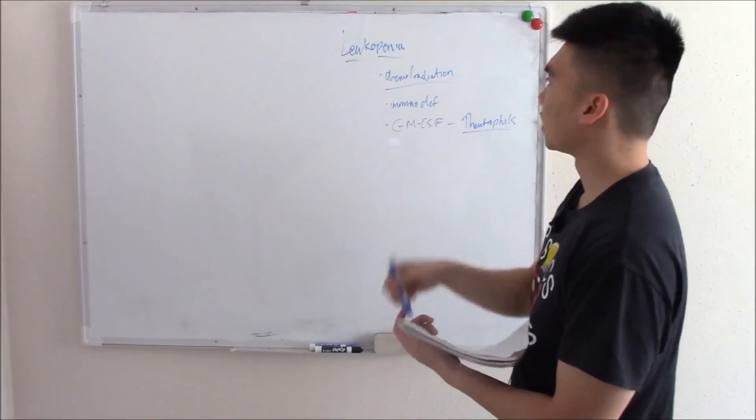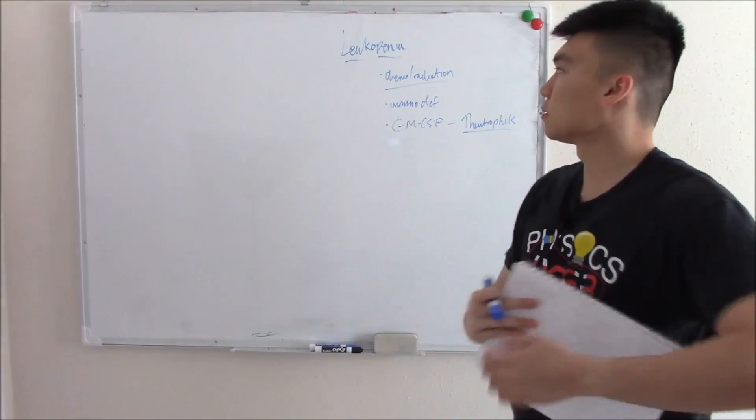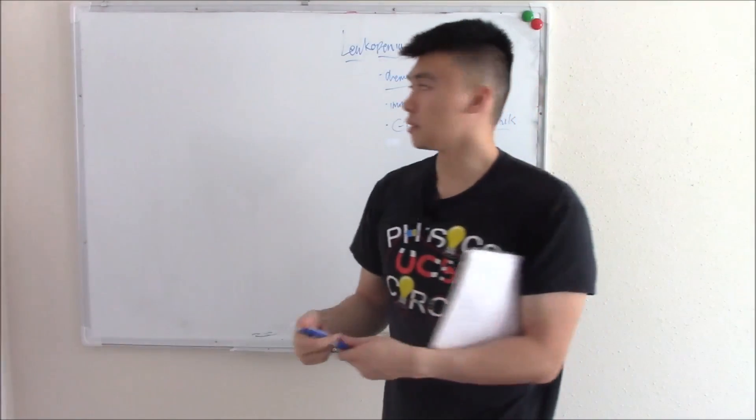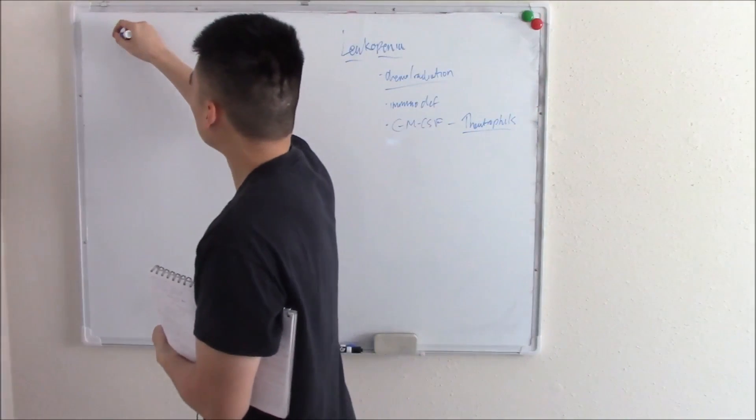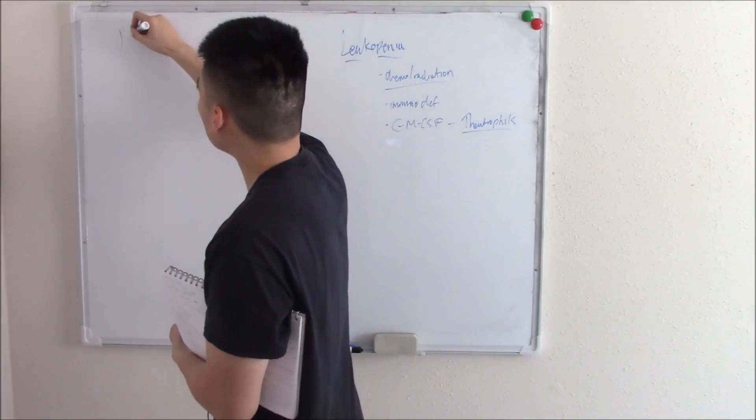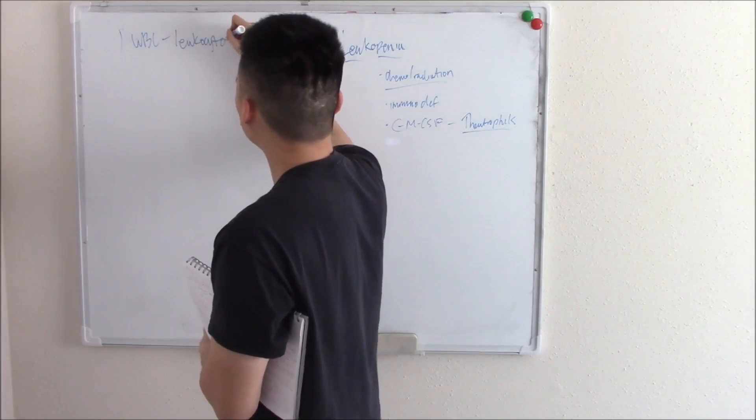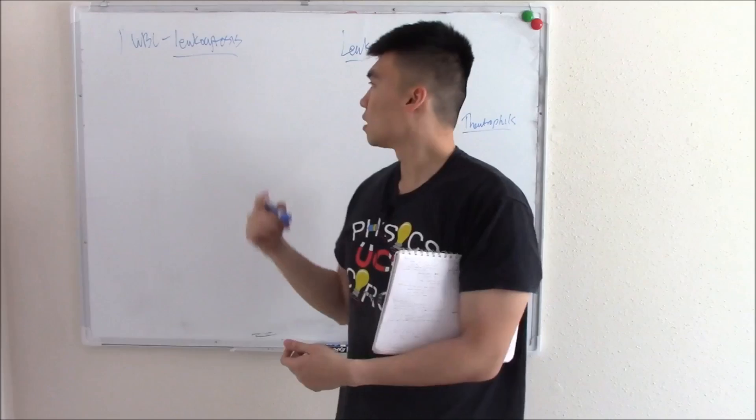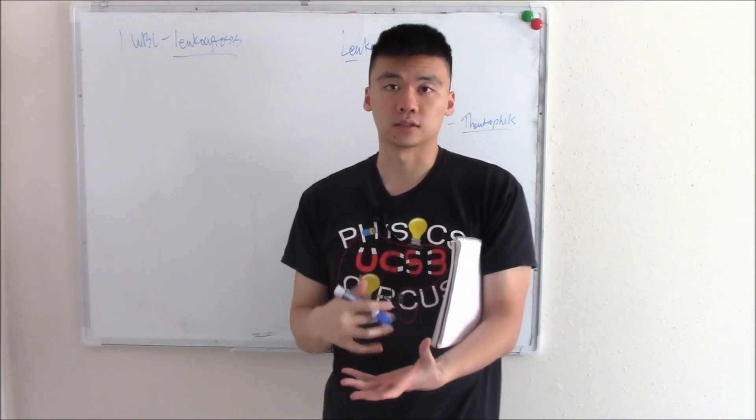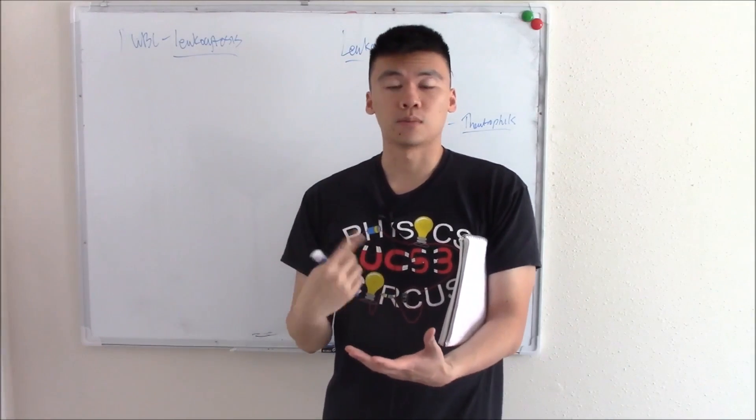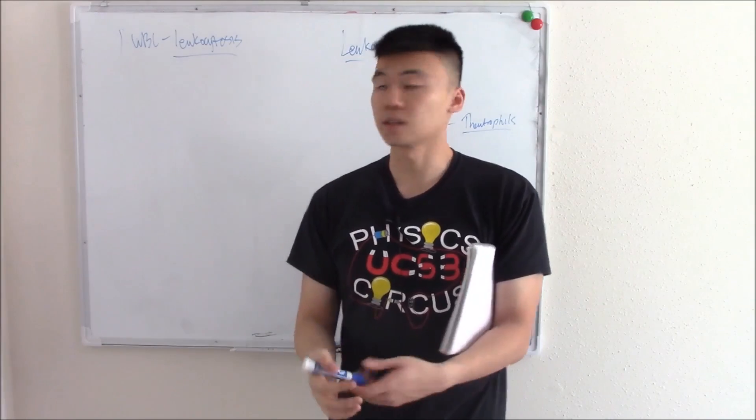That's leukopenia. You can also have increased white blood cells, which we call leukocytosis. The most common cause is infection. In an infection, your body ramps up your immune system and makes more white blood cells.